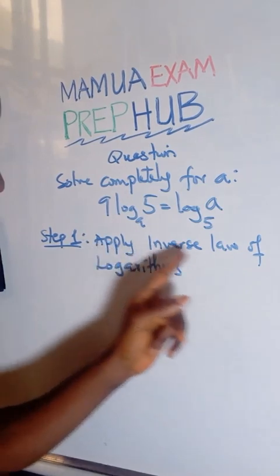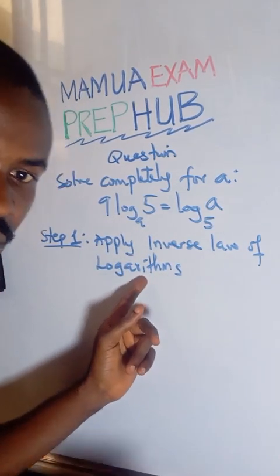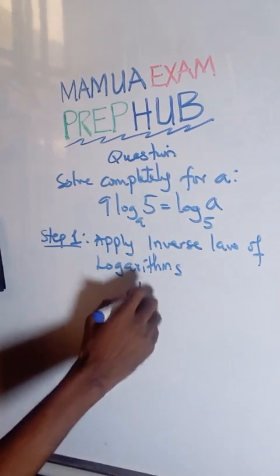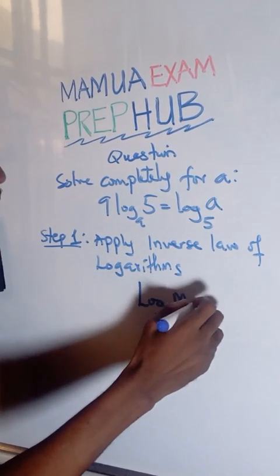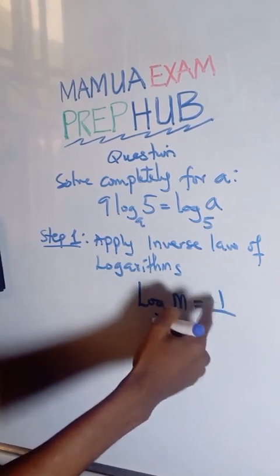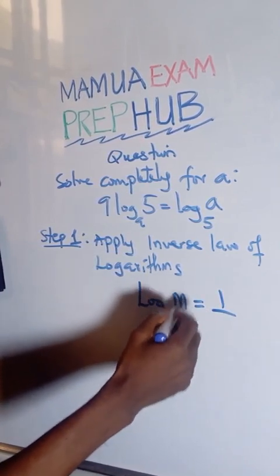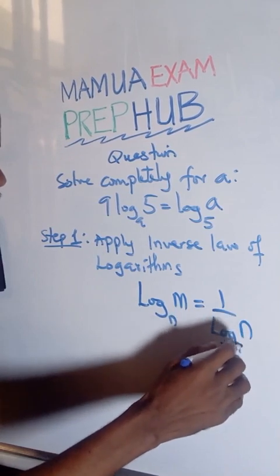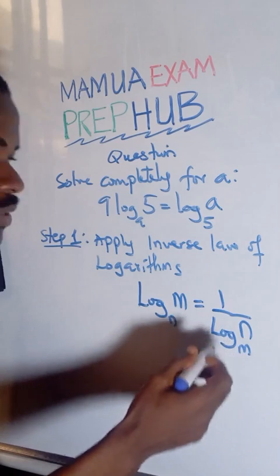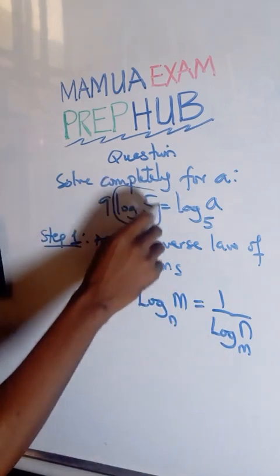First we are going to apply the inverse law of logarithm. I am going to show it. If I have log base m of n, I am going to bring that inverse. So we are going to swap this. So it becomes log base n of m. This is the inverse law of logarithm. Now I am going to apply this here.